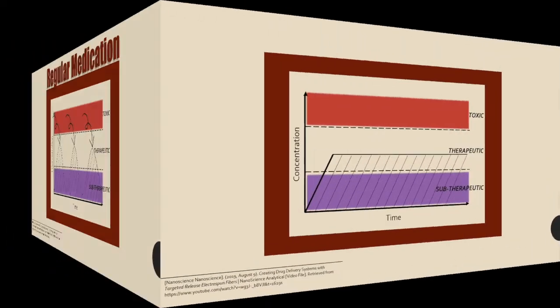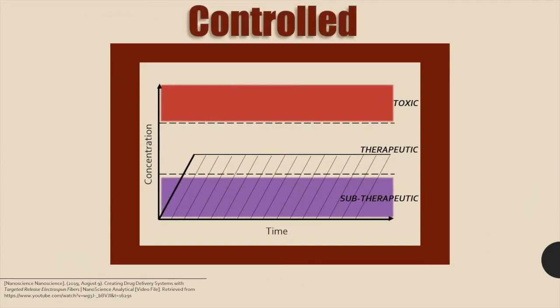Next is this chart showing how controlled nanofiber drugs work. There is an initial rise to the therapeutic range, which means the drug is working, and then constant release means that the drug is continuously working through longer periods of time. So much so that re-administering the drug is unnecessary.